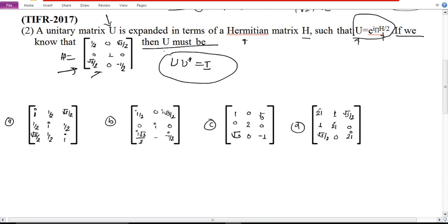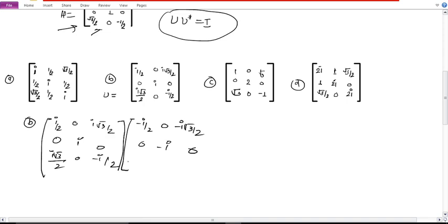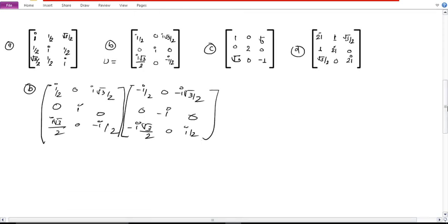Out of these four options, whichever matrix satisfies the unitary matrix condition. The unitary matrix condition is U into U conjugate equals I. We need to pick one option and check. I'll use option B. I know the answer, that's why I took B directly. So see, I've taken this B matrix as the U matrix.